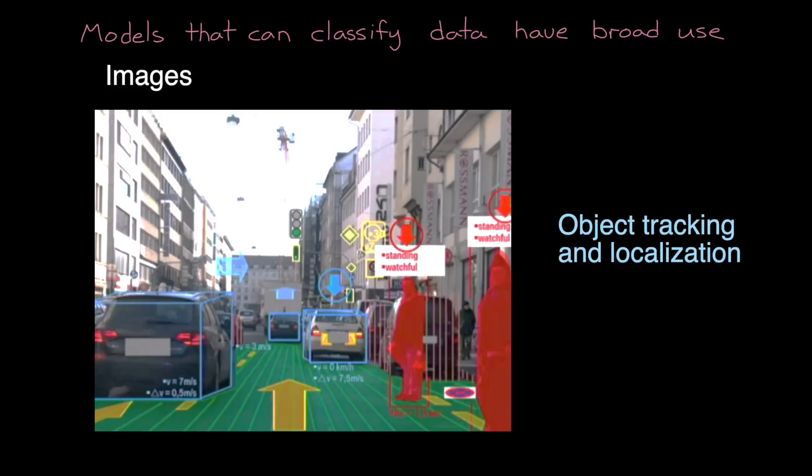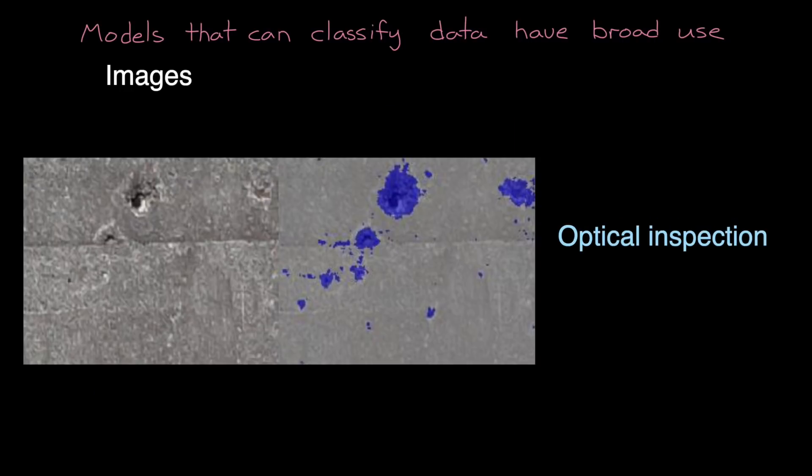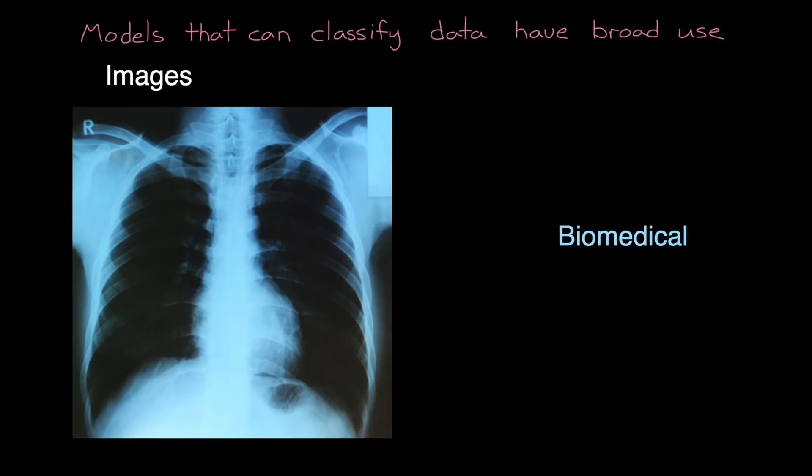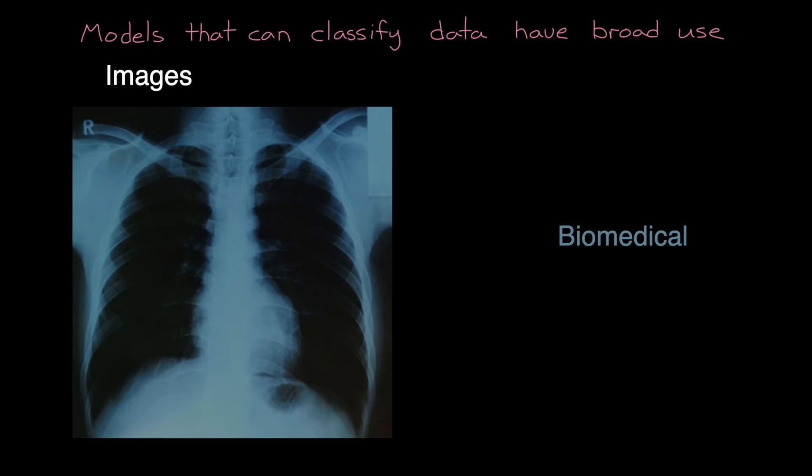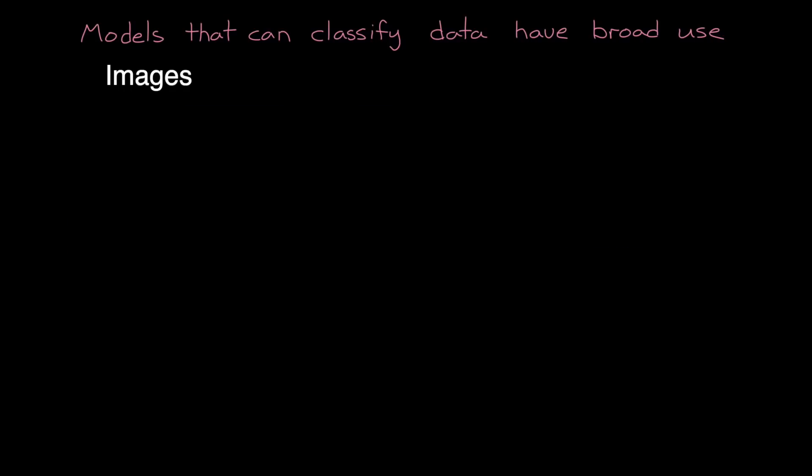Having a trained model that can classify data is beneficial far beyond being able to label pictures of cats or objects on a desk. For example, we may want to find and label specific objects in an image which we can use for object tracking and localization. We might want to visually inspect hardware for defects like material damage, or we may want to diagnose health issues from an x-ray or MRI image.